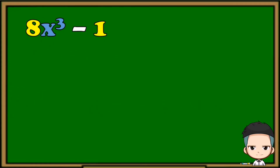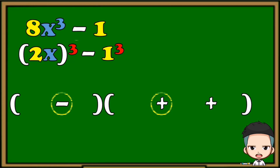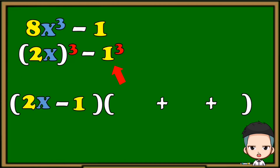Another example: 8x³ − 1. This is an example of difference of two cubes. The first step is to put them in their cube form and make sure to copy the exact operation. Next, prepare the parentheses, being careful with the operations. Copy the base of the first term and the base of the second term.